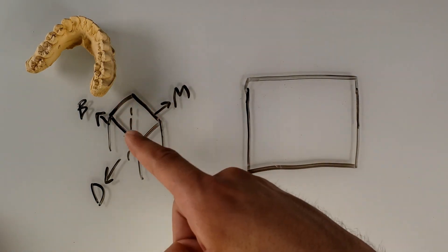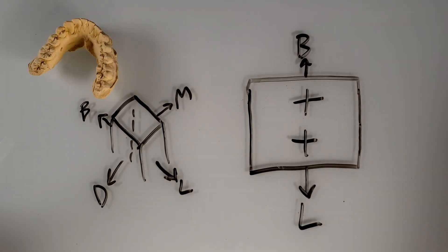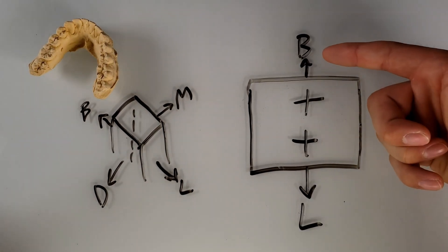Now if we took this occlusal perspective and we looked at it from the top, what we'll see is two cusps. So these two cusps correspond to the buccal and the lingual.